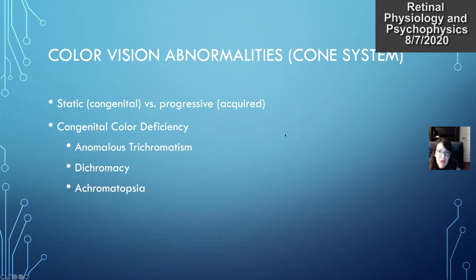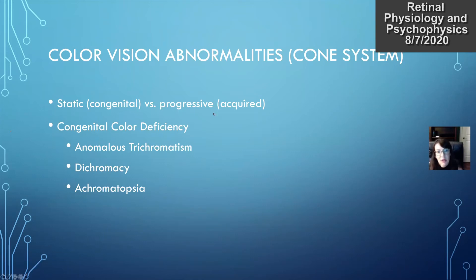With color vision abnormalities you can have congenital versus progressive. Congenital color vision abnormalities tend to be bilateral, along the red-green color axis, and stationary — they do not progress or worsen throughout life. Males are predominantly affected as a lot of them are X-linked. Progressive abnormalities can affect either males or females, tend to be unilateral or bilateral, and are along the blue-yellow axis.